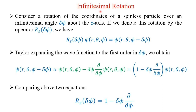First we will see the infinitesimal rotation — this is a very small rotation. Consider a rotation of coordinates of a spinless particle over an infinitesimal angle delta phi, where delta phi is very small and tends to zero, about the z-axis. If we denote this rotation by an operator Rz, which is a function of delta phi, unlike the classical mechanics rotation matrix, when Rz acts on the wave function psi — which is a function of R, theta, phi in spherical coordinates — the rotation matrix will affect only the phi component because the rotation is along the z direction.